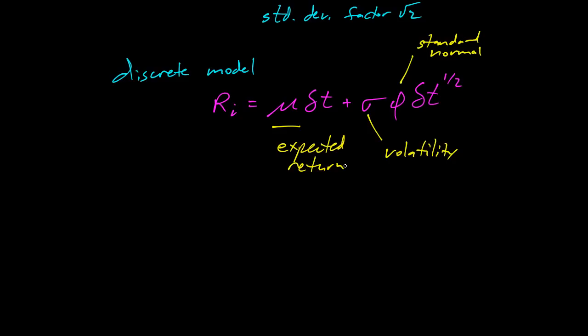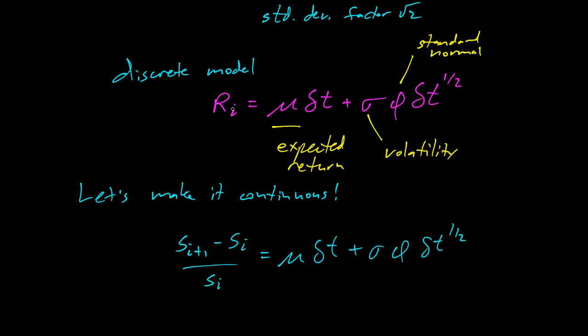Now we'd like to do a continuous model. So how do we make it continuous? So let's make it continuous. Exclamation. So the first step there is we can write this r i as s i plus 1 minus s i over s i equals mu delta t plus sigma phi delta t to the 1 half. Just substituting for r i there.